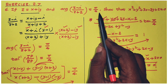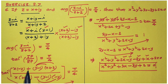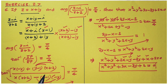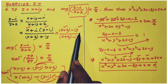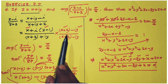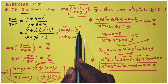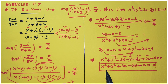So now it is proved that the argument equals pi by 4. For the complex number (z minus i) divided by (z plus 2), we substitute z equals x plus iy, separate real and imaginary parts, multiply by the conjugate of the denominator, apply argument equals tan inverse of imaginary part divided by real part equals pi by 4, and finally solve to get the required result. Thank you.